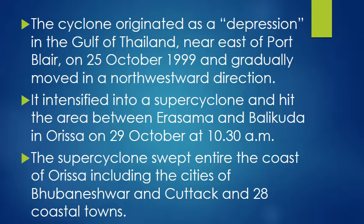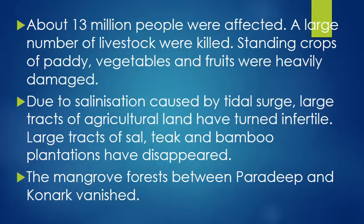It hit the area between Erasama and Baliguda in Odisha on 29th October at 10:30 am. The super cyclone swept the coast of Odisha, including the cities of Bhubaneswar and Cuttack, and 28 coastal towns. About 30 million people were affected. A large number of livestock were killed. Standing crops of paddy, vegetables and fruits were heavily damaged. Due to salination caused by the tidal surge, large tracts of agriculture land turned infertile. Large tracts of soil, teak and bamboo plantations disappeared. The mangrove forest between Paradip and Konark vanished.